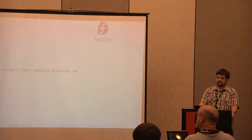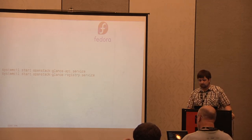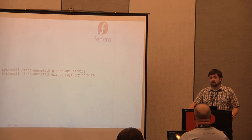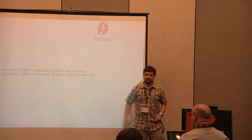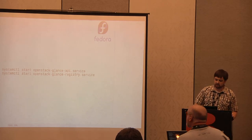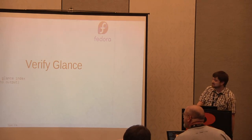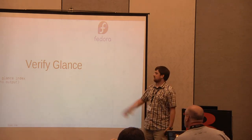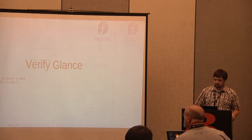Glance has two services: a Glance API service and a Glance registry service, and we start them both. As a side note, for those asking about CentOS and RHEL support — all these instructions should work there too, except the service start commands use 'service start' instead of the new systemd version. To verify Glance is working, run 'glance index.' It provides no output because I haven't uploaded any images yet, but if Glance wasn't working we'd get an error. No output means it's good.